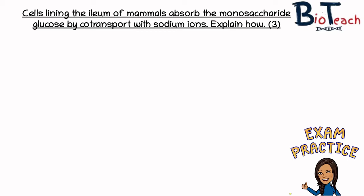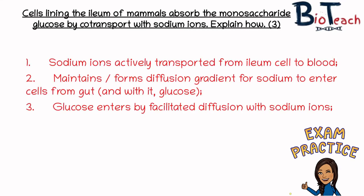You know my videos contain the application of that knowledge, so I've got a few exam questions here that you can attempt. This first one is for three marks: the cells lining the ileum of mammals absorb glucose by co-transport with sodium ions — explain how this happens. Looking at the mark scheme: the first mark is for saying that sodium ions are actively transported from the ileum cell into the blood. The second mark is for explaining how that maintains a diffusion gradient allowing sodium to enter from the gut cells and carry glucose with it. The third mark is for specifically saying that glucose enters by facilitated diffusion with the sodium ions.